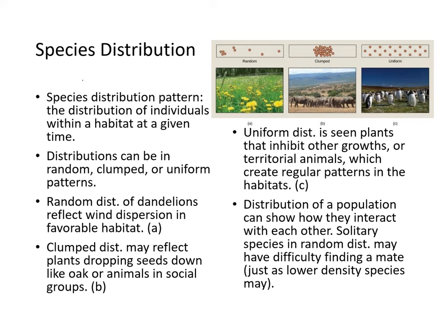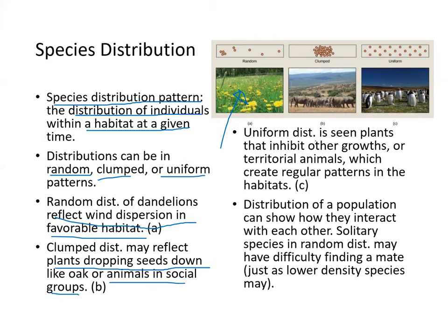Population can also be described using the species distribution pattern — the distribution of individuals within a habitat at any given time. Distributions can be random, clumped, or uniform. Random distribution, like dandelions, reflects wind dispersal and favorable habitat. Clumped distribution reflects plants dropping seeds nearby or animals in social groups. Uniform distribution is seen in plants that inhibit other growth, or territorial animals that create a regular pattern.